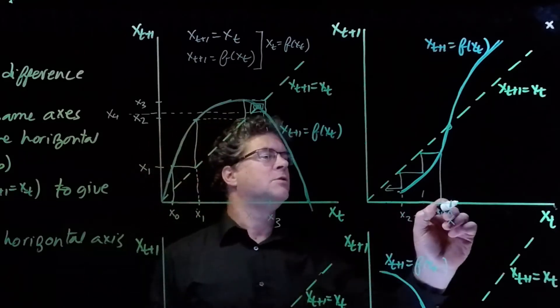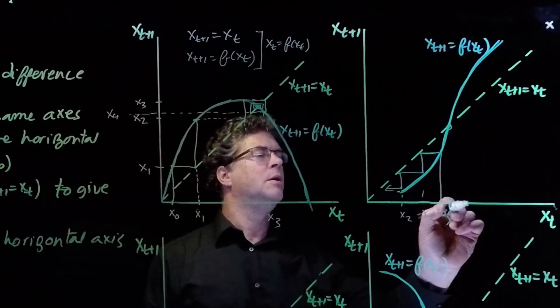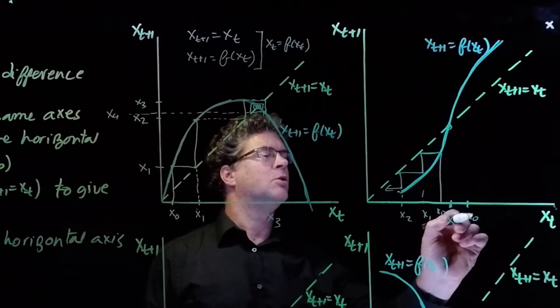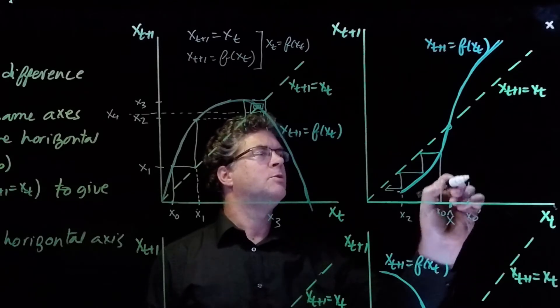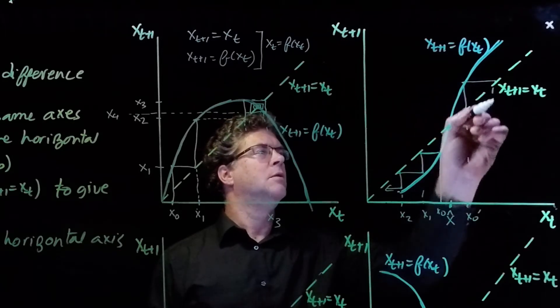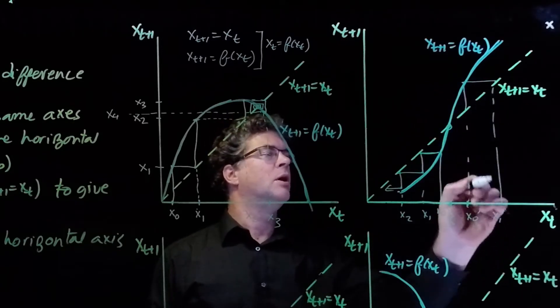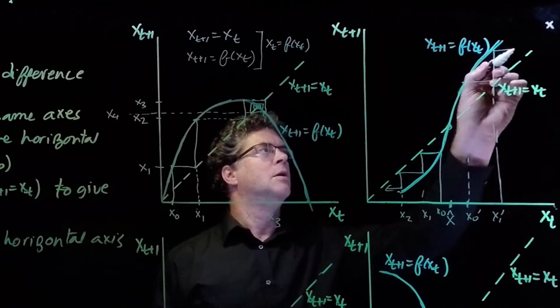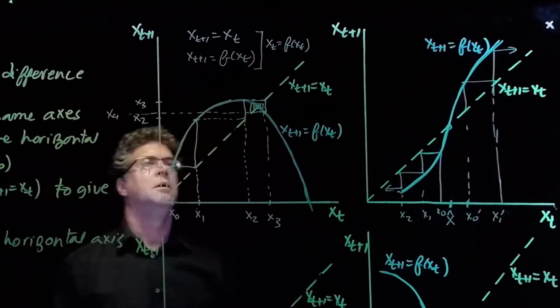If we start to the right-hand side of the equilibrium point, I'll call this x_0 prime, and we go up to the function. And we have x_1 prime, and so on.